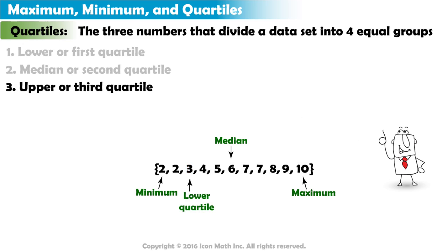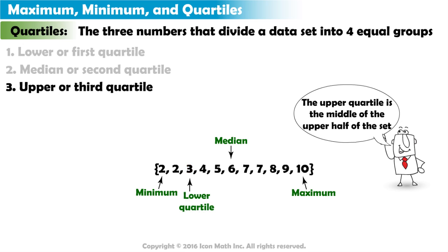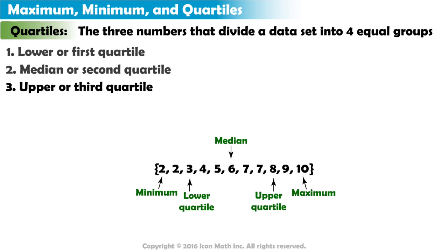To find the upper quartile, we must find the middle number for the upper half of the dataset. 8 is the middle number for the upper half of the dataset, so 8 is the upper quartile.